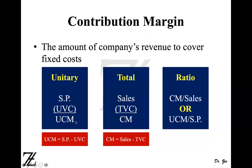You can also calculate the variable cost ratio, just like you calculated the contribution margin ratio (CMR). The variable cost ratio is calculated by dividing total variable cost by sales, or by dividing unit variable cost by selling price, and that will give you your variable cost ratio.